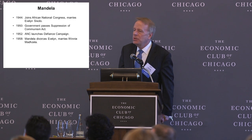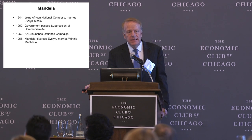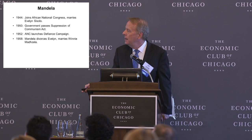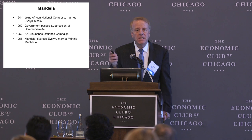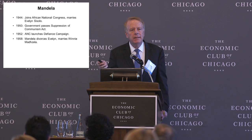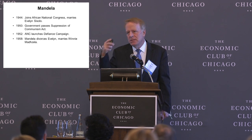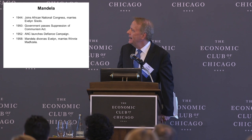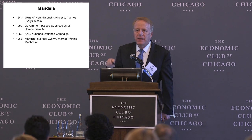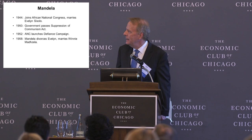In 1952, the ANC launched the Defiance Campaign. At first it was peaceful — strikes, work stoppages, people not using the buses — but as we'll see in a second, it started to get more violent pretty quickly.